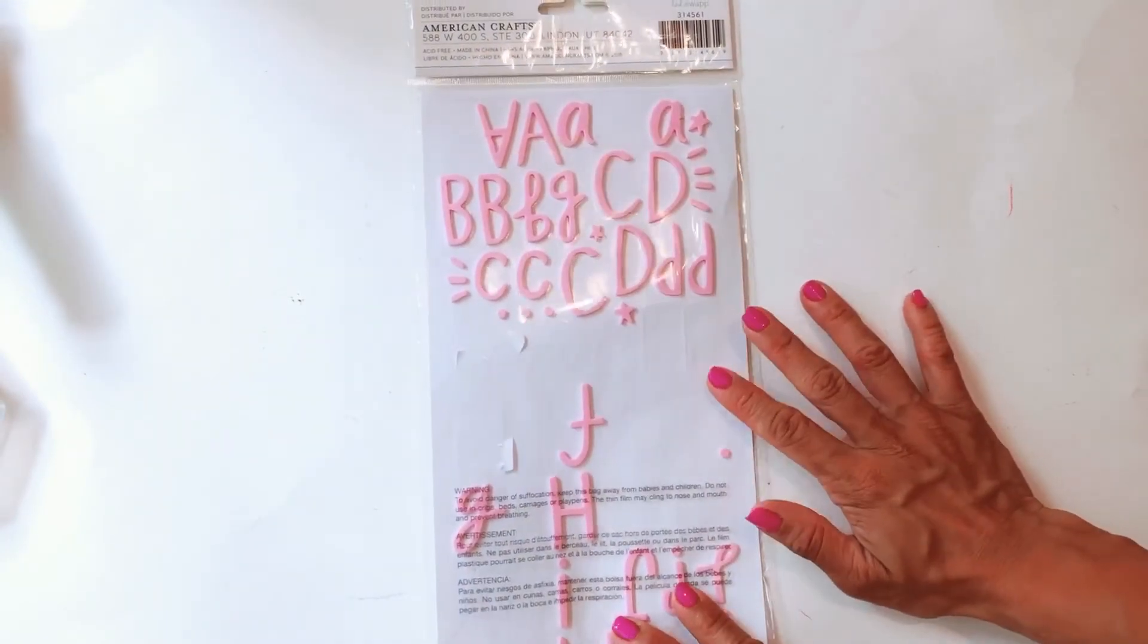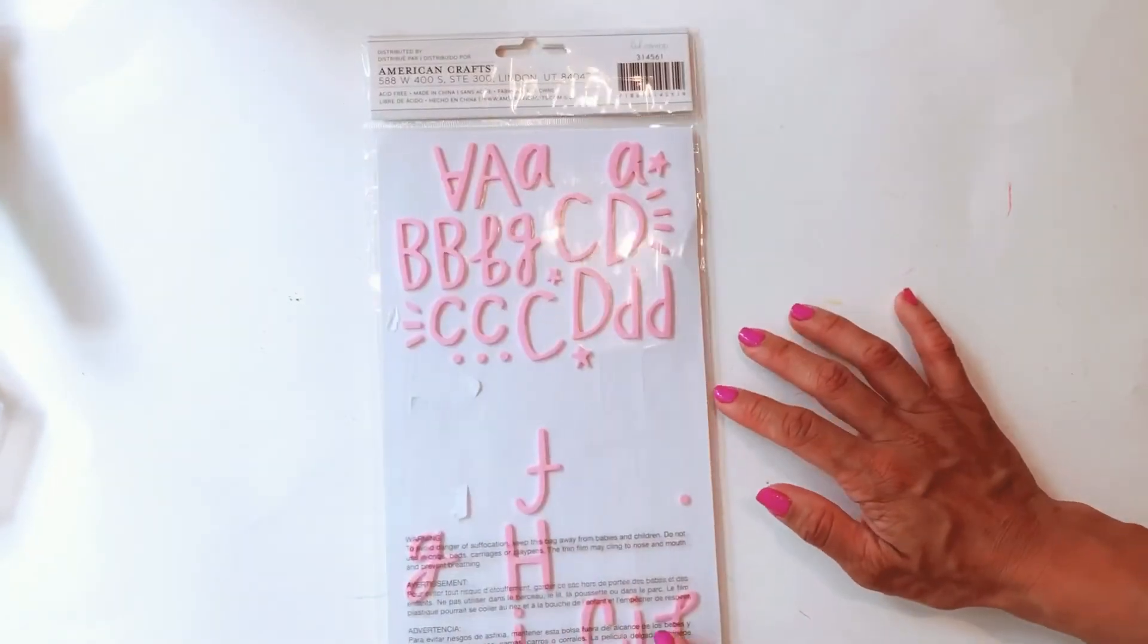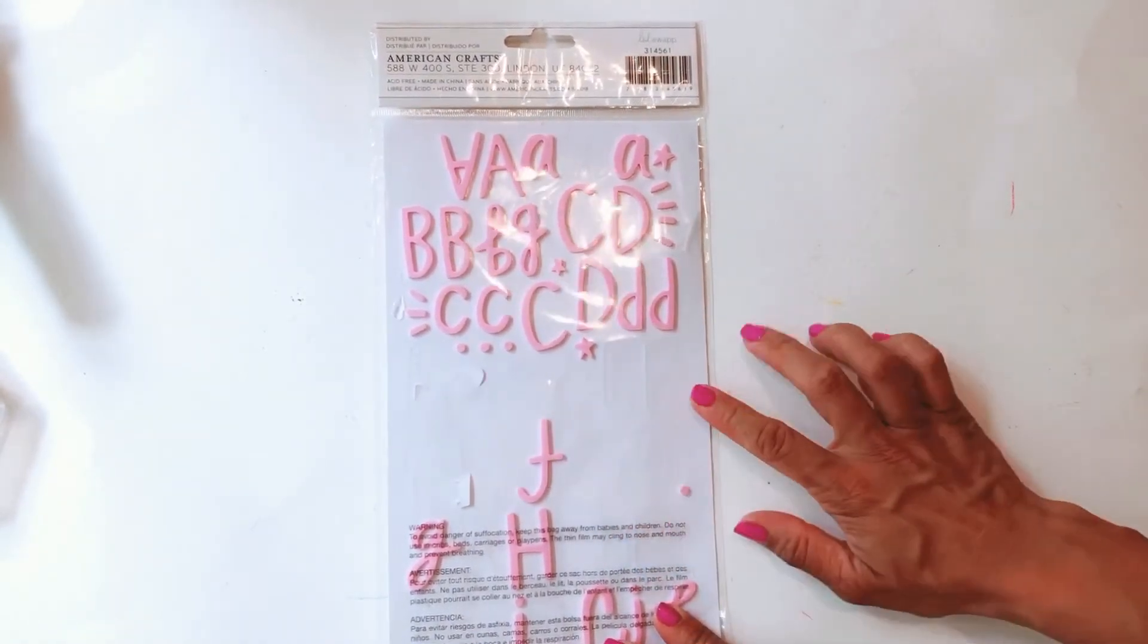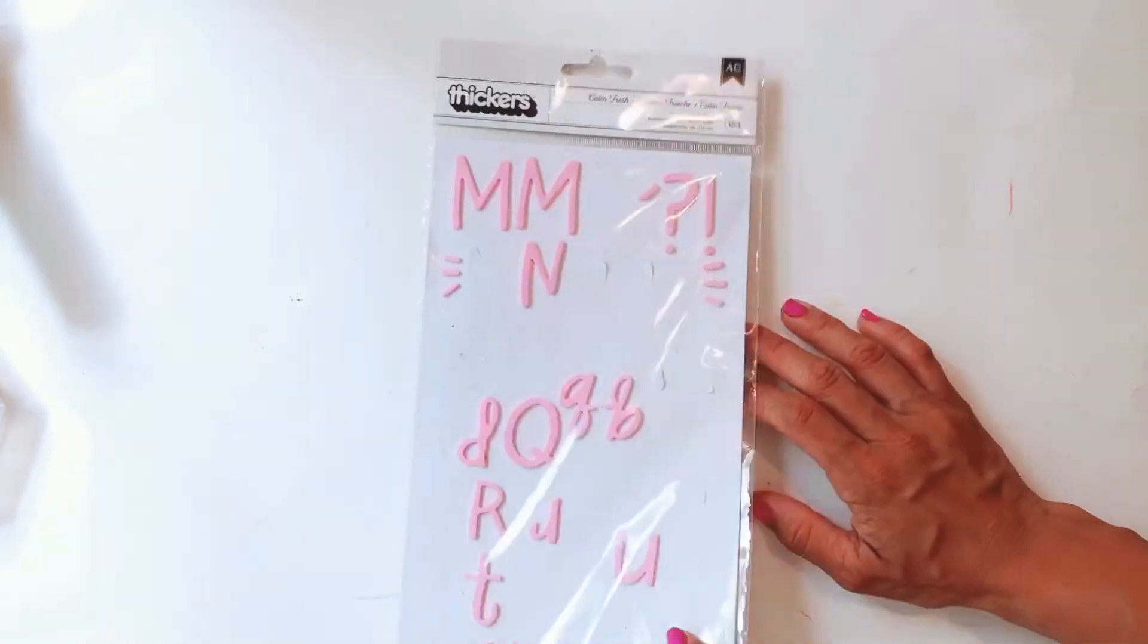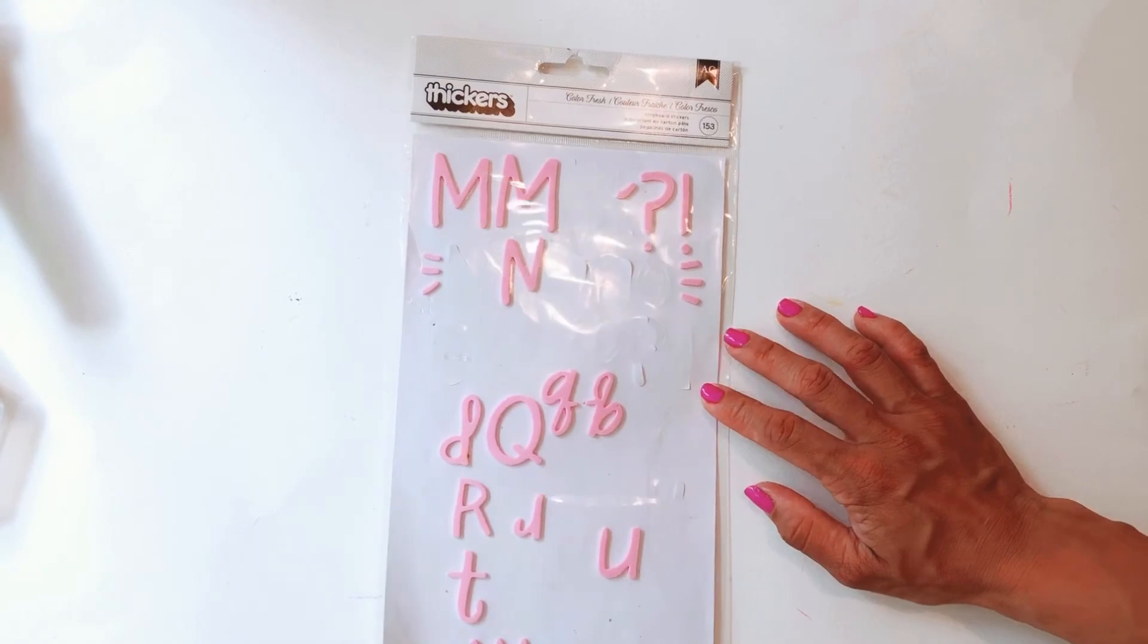Oh, actually there was one more thing I forgot to show you, which was these foam alphas that are from the All Heart collection. Like, as you can see, I have used this pack over and over. I've used so many alphas. I've completely run out of the vowels that I always reach for, like the E's and the O's. So even the U's, I'm down to my last one. So that's always a good sign that an alpha sticker is, you know, a popular choice.